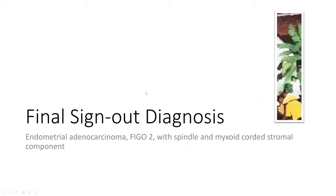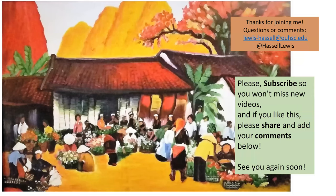So our final sign-out diagnosis today is endometrial adenocarcinoma, FIGO grade 2, with spindle and myxoid corded stromal component, invasive into the inner one-half of the myometrium. This is a challenging area. We appreciate you sticking with us through this, and welcome your comments. If you've encountered some of these cases or have thoughts on how you manage these concerning situations, please drop us a line or share a comment below. We invite you to subscribe so that you don't miss future offerings from our channel. We hope to see you again soon, but until then, thanks so much for joining us.